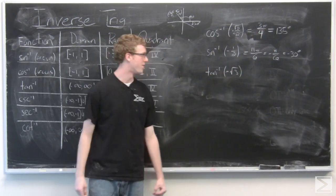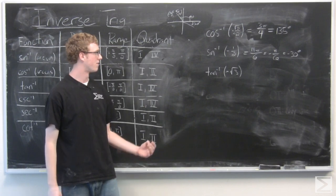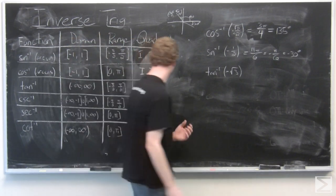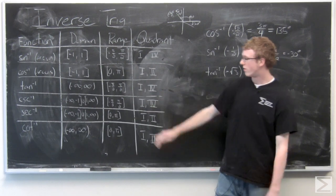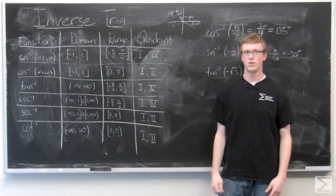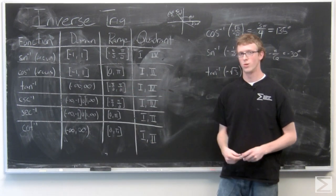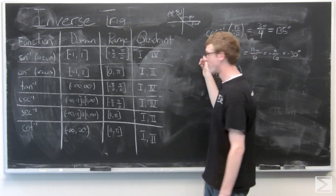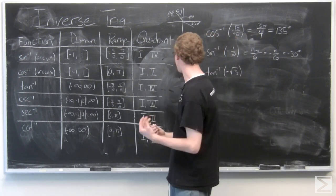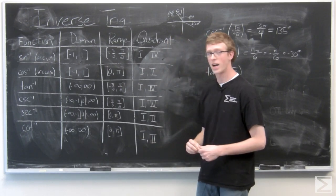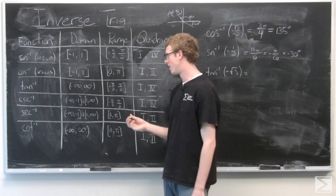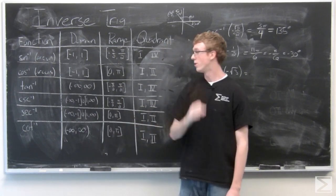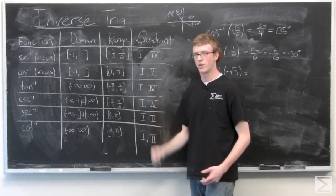Now we can take a look at inverse tangent of negative square root of 3. So we see that inverse tangent lives in quadrant 1 and 4. The range is negative π over 2 to π over 2. And we intuitively think that we're probably going to have to do something similar with inverse tangent as what we did with inverse sine there in subtracting 2π. So tangent is negative in quadrants 4 and 2. So we know we're going to be working in quadrant 4.